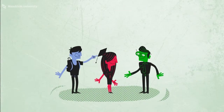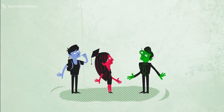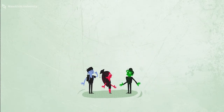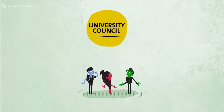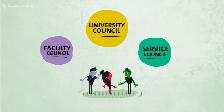How do you get to have a say at the University? There are three representative bodies: the University Council, the Faculty Councils and the Service Councils.